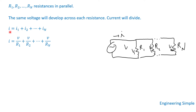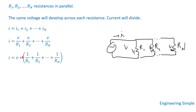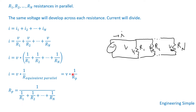The total current equals I1, and from Ohm's law I1 is V1 divided by R1. Since V1 equals V, we get: I equals V/R1 plus V/R2 plus ... plus V/Rn. Factoring out V gives: I equals V times (1/R1 + 1/R2 + ... + 1/Rn). We can write this as I equals V times 1/Rp, where Rp is the equivalent parallel resistance — that is, 1 over the entire sum.